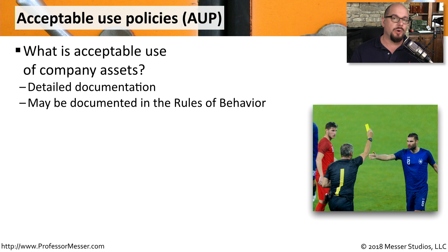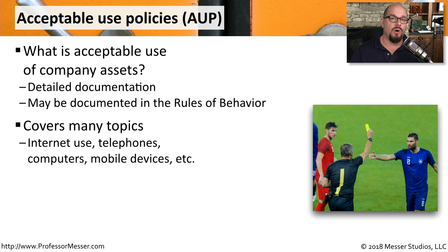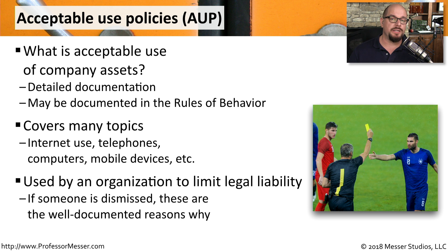An acceptable use policy, or AUP, is a document that identifies exactly what is appropriate and what is not appropriate activity on an organization's network. This may also be documented in an employee's rules of behavior. The AUP can cover a wide range of technologies, including telephones, computers, mobile devices, tablets, and anything else dealing with information technology. The AUP is generally signed by anyone using the technology in the organization, so if someone is dismissed for violating it, there is documented information on what was understood beforehand and exactly which rules were broken.